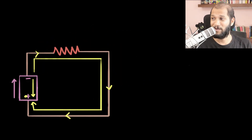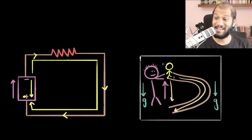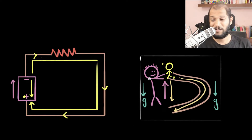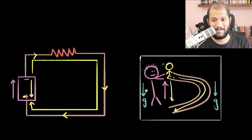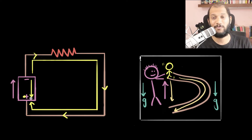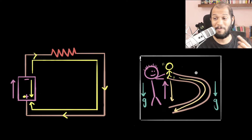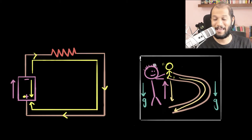This is very similar to a kid on a slide. The parent is like the battery, pushing the kid against gravity, and gravity is like the electric force. The kid comes back down due to gravity and then the cycle repeats.